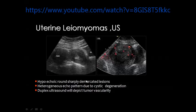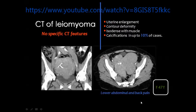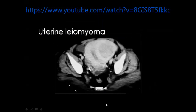By ultrasound the fibroid will appear hypoechoic, and with Doppler you can see vascularity within the mass. By CT you get a lobulated mass of almost similar density to the uterine muscles. This mass may be small or large and usually contains calcification in up to 10 percent of cases. The uterine fibroid appears on CT images with similar density and enhancement to the myometrium, but sometimes due to degenerative changes it will appear somewhat hypodense or less enhancing compared to the myometrium.